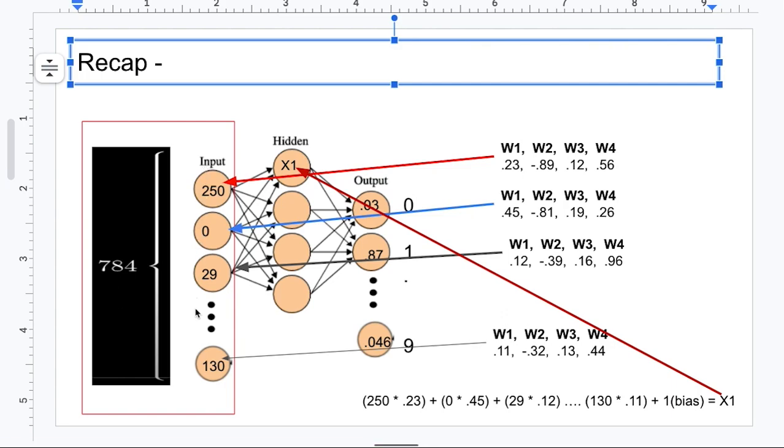And then we generate random weights. These are some examples here that are between the values of negative one and one. And we also have biases for each of the neurons in the hidden layer, and that's set to one by default. So as you can see here, we have four neurons in the hidden layer and then four weights that represent each neuron.